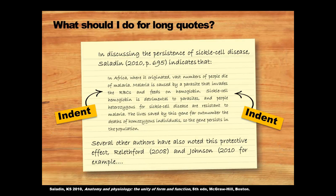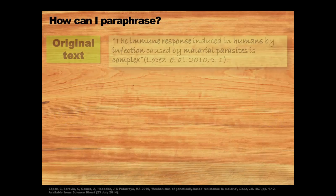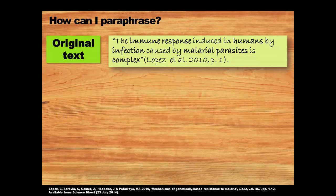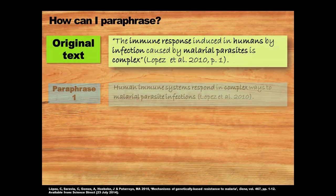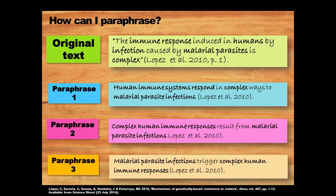You'd want to keep long and even short quotes to a minimum. As a general rule of thumb, quotes should be less than 10% of your word count. This means you need to paraphrase, and that can take a bit of practice. It's easier if you read for overall meaning, focus on important nouns and technical words, and think of different ways of combining these. Keep going until your sentence is as different as possible from the original, but still has the same basic meaning.